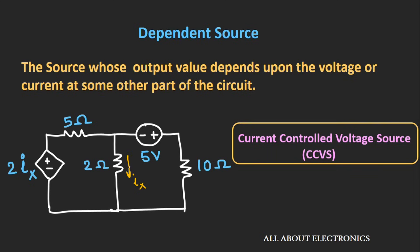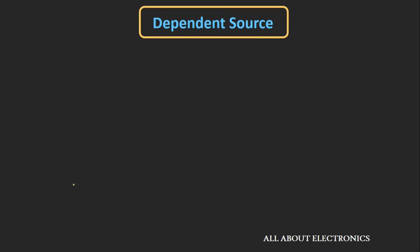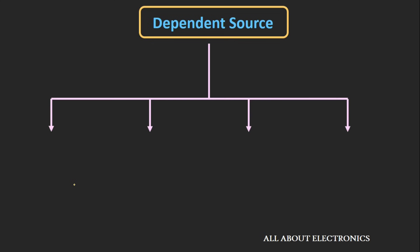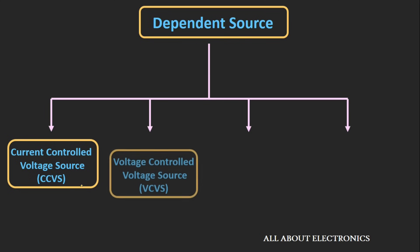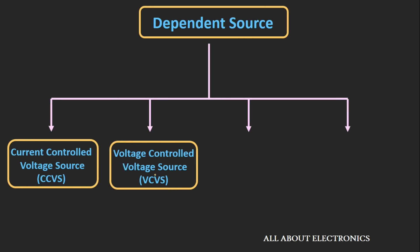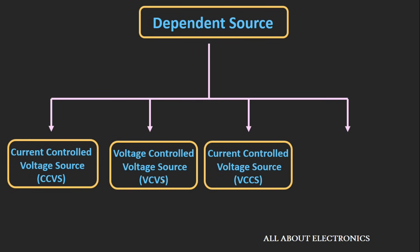Likewise, we can have a voltage-controlled voltage source, where voltage is controlling the output voltage. In this way, there are 4 different kinds of dependent sources. The first is the current-controlled voltage source, where current is controlling the output voltage. The second is the voltage-controlled voltage source, where voltage is controlling the output voltage of a voltage source.